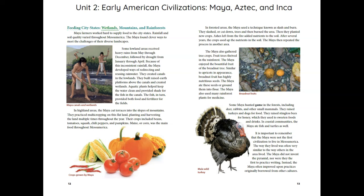Feeding City-States — Wetlands, Mountains, and Rainforests: Maya farmers worked hard to supply food to the city-states. Rainfall and soil quality varied throughout Mesoamerica, and the Maya found clever ways to meet the challenges of their diverse landscapes. Some lowland areas received heavy rains from May through December, followed by drought from January through April. Because of this inconsistent rainfall, the Maya developed ways of redirecting and reusing rainwater. They created canals in the lowlands and built raised earth platforms above the canals to create wetlands. Aquatic plants helped keep the water clean and provided shade for the fish in the canals. The fish, in turn, provided both food and fertilizer for the fields.